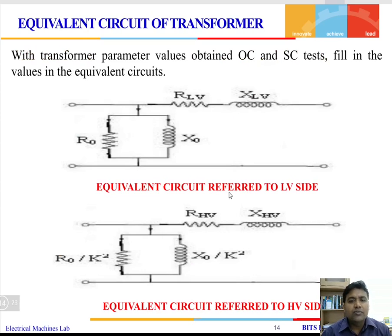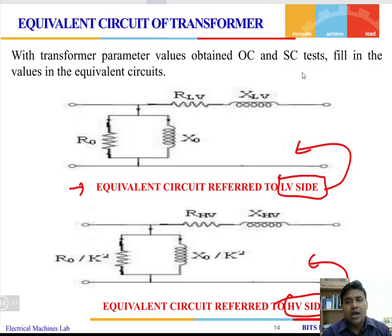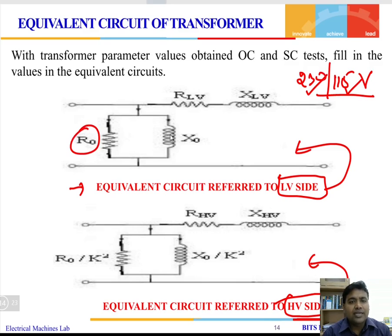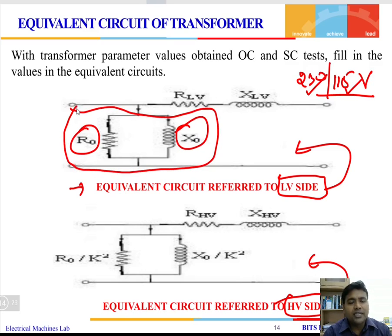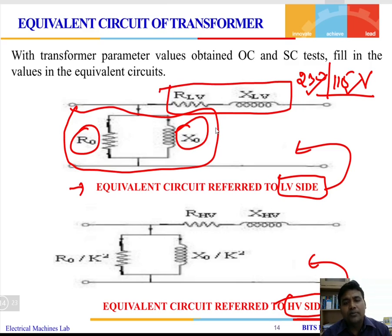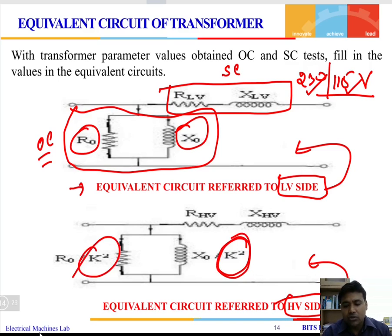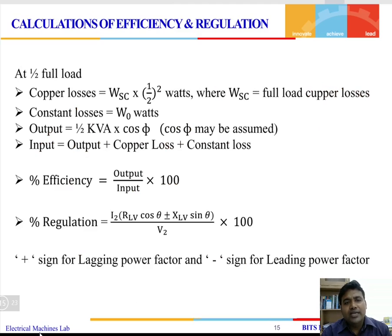Here we can see the equivalent circuit of the transformer referred to the low voltage side and to the high voltage side. Our transformer is 230/115 volt — 115 volt is the low voltage side and 230 volt is the high voltage side. R0 and X0 are the shunt parameters obtained from the OC test, and the series parameters — resistance and reactance — are obtained from the SC test. To transfer data from the low voltage side to the high voltage side, divide by k² = (N1/N2)².